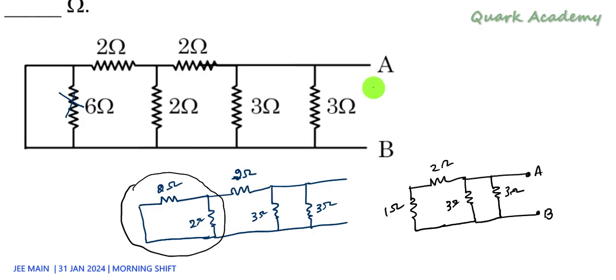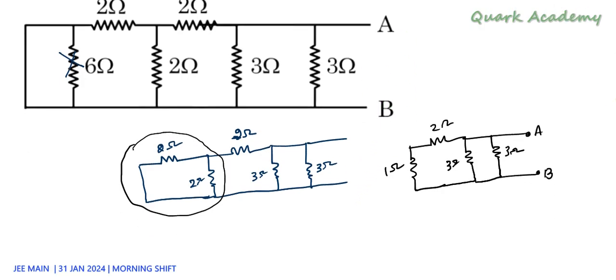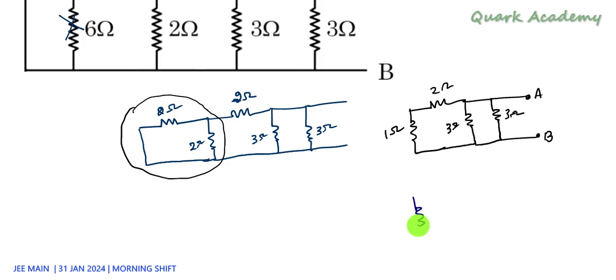Now if you look at 1 ohm and 2 ohm, they are in series. If they are in series, we can simply add them. So it will become 3 ohm here, 3 ohm again here, 3 ohm.